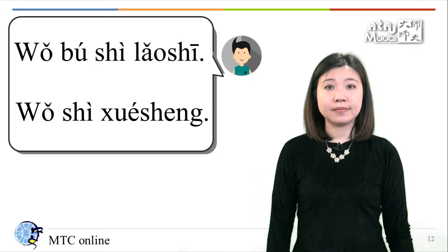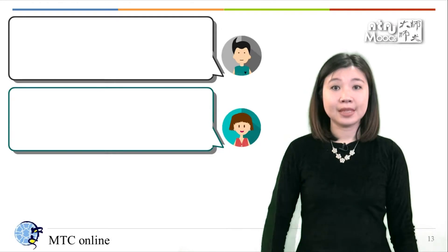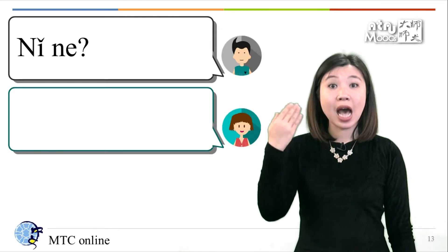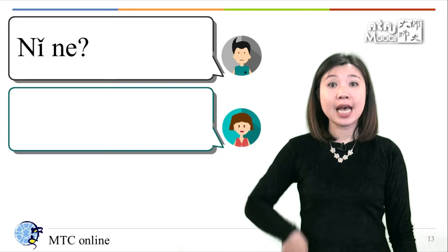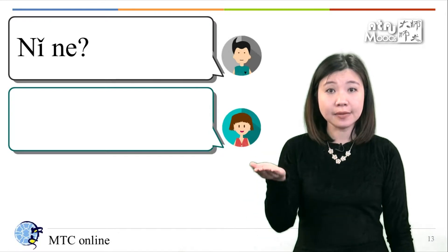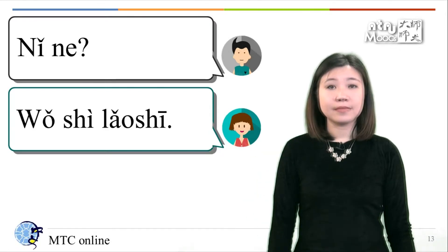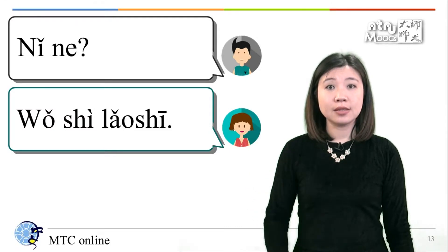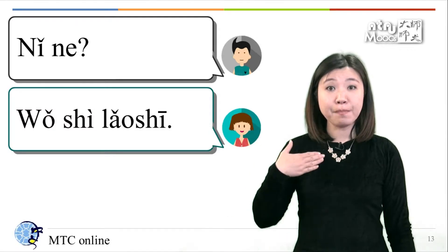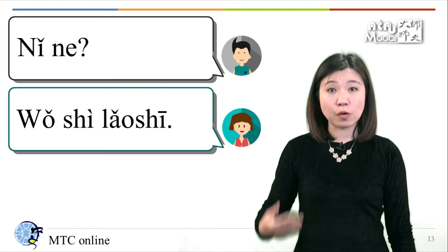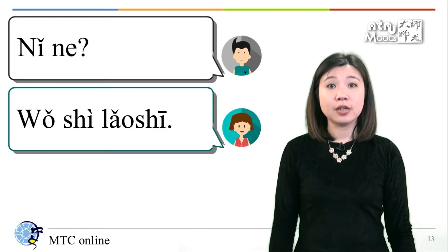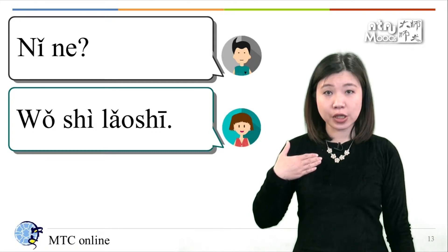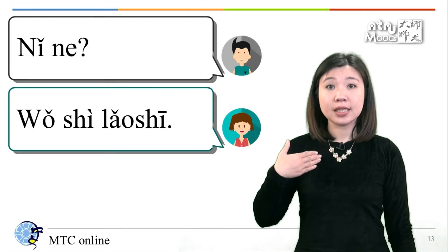你呢？So if you want to ask 'how about you?', we use 你呢？我是老师。I'm a teacher. 老师 means teacher. 我是老师。I'm a teacher.